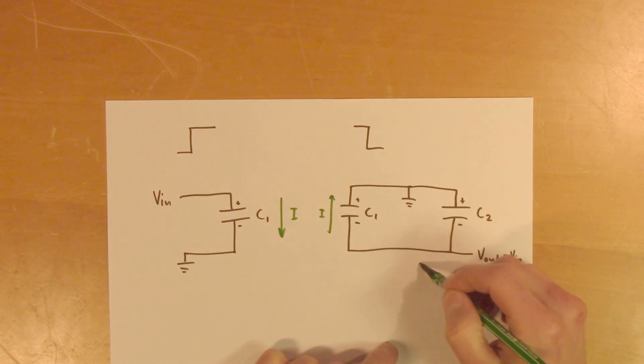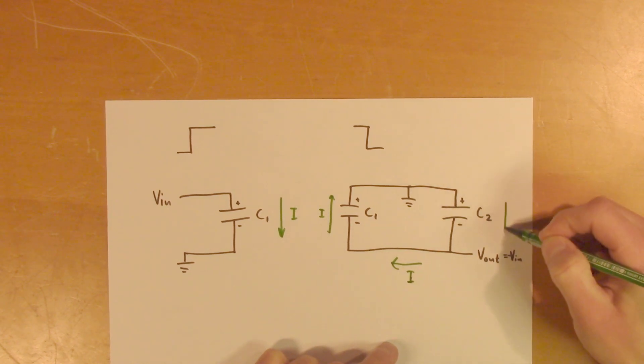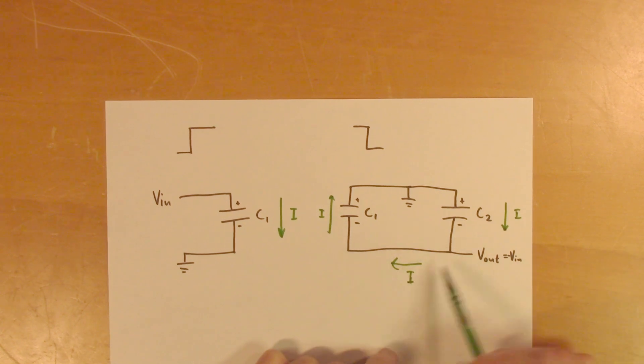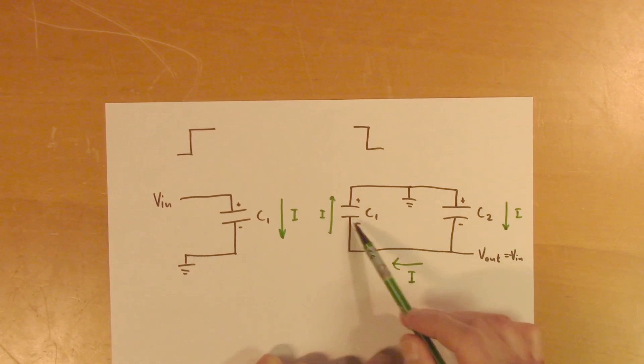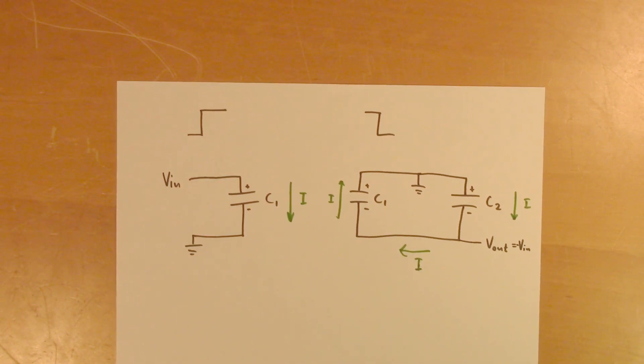And the current will flow through it. And it will pull the current from this node, which will then pull current from this capacitor, thereby transferring charges from this capacitor to this one. So when this procedure is stabilized, these two capacitors will have the same charge. And then the cycle is repeated.